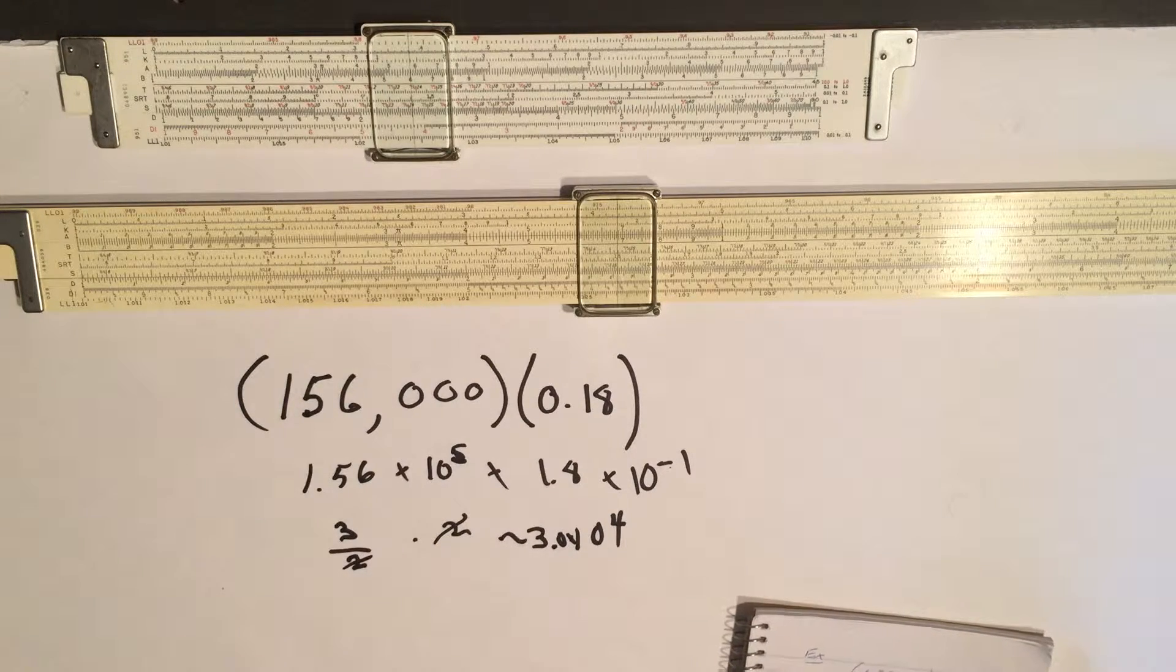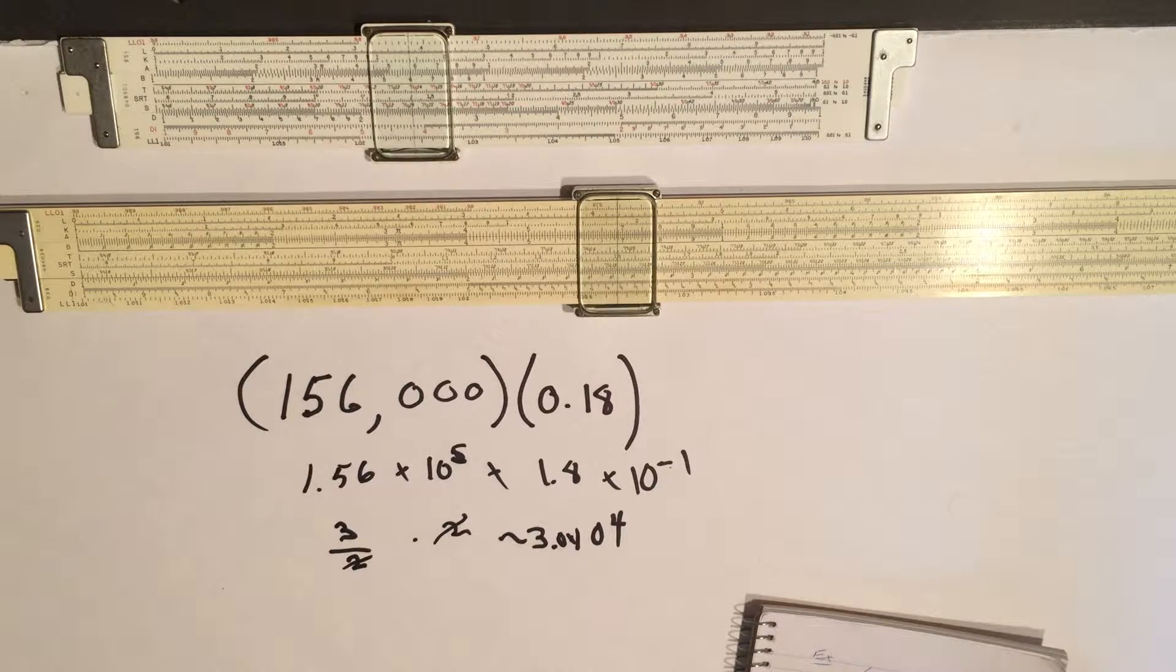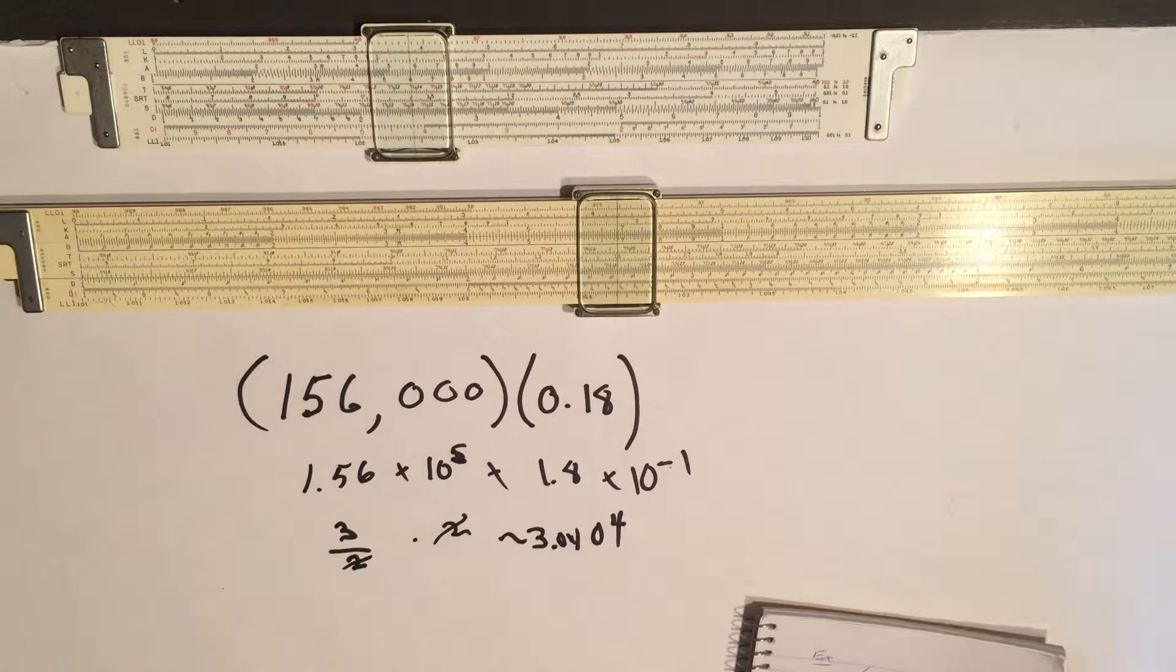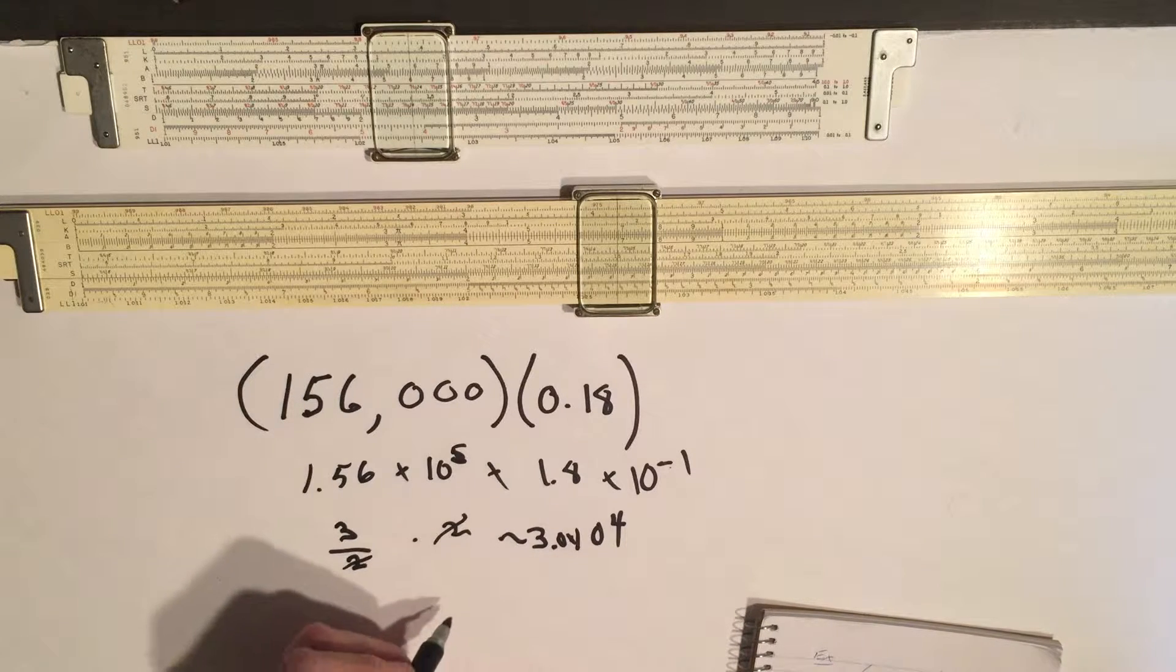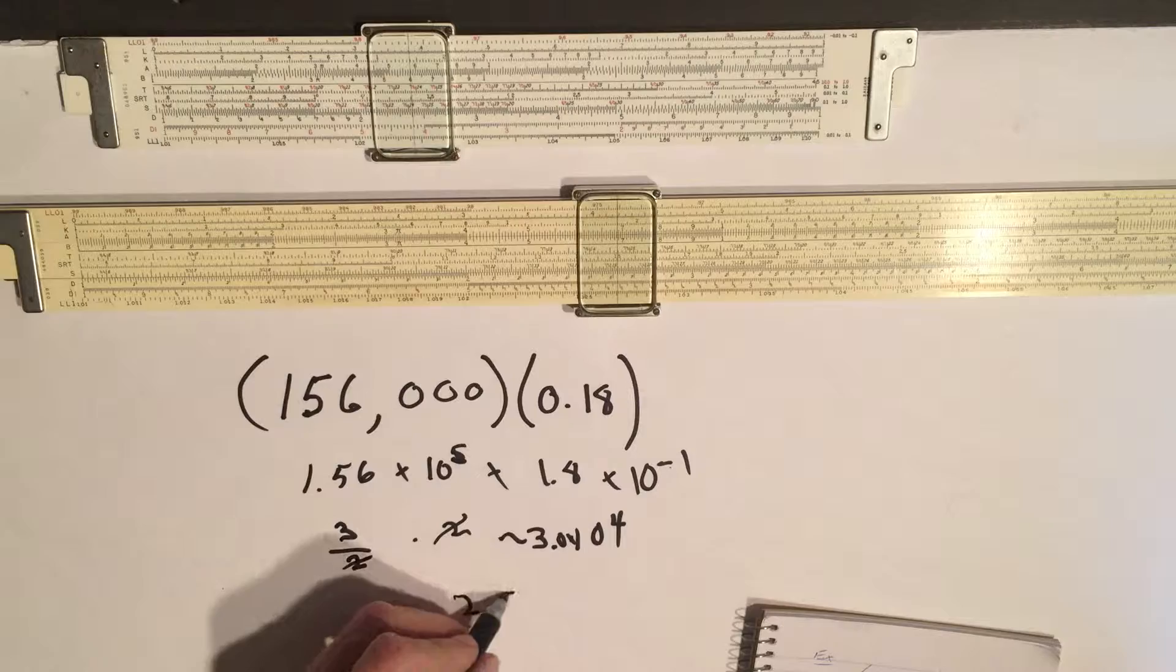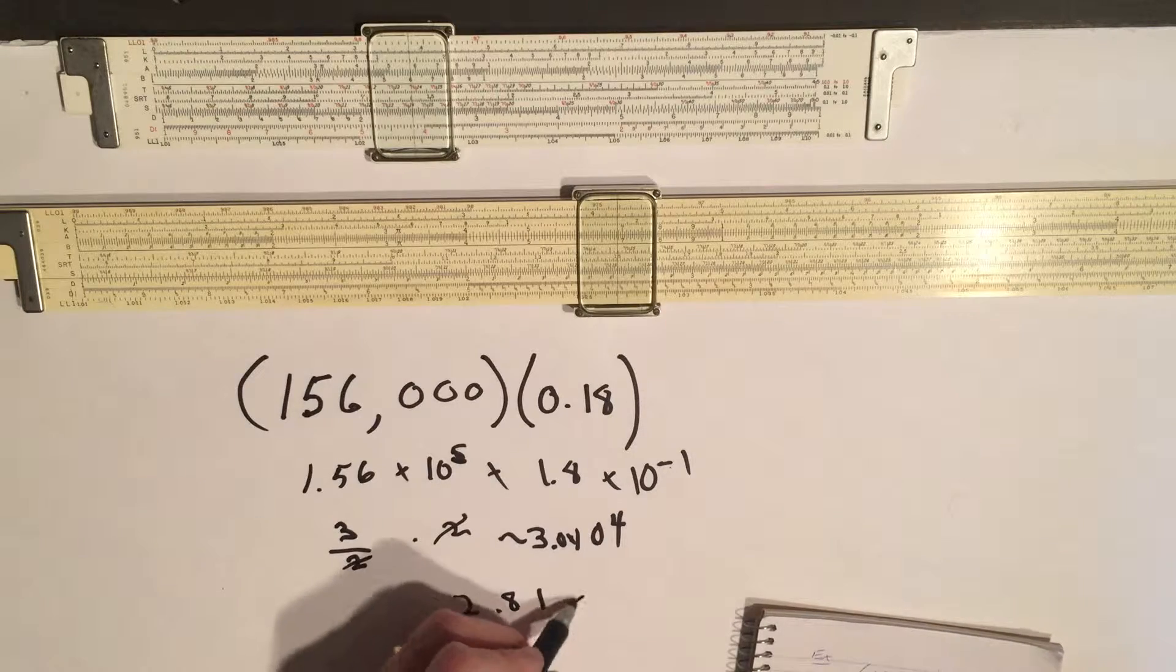And surely enough on the calculator it comes close to this. I think on the slide rule you get the number of 2.81 times 10 to the 4th.